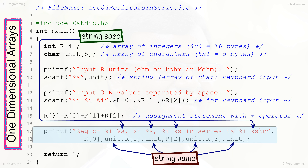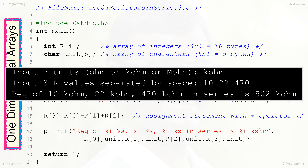Lines 17 and 18 contain the printf statement that displays the output using four %d integer specifications for the resistances and four %s string specifications for the units. Elements R[0], R[1], and R[2] are used for the input resistances and R[3] for the computed equivalent resistance. The string name 'unit' is used for the display of units for all four resistances. The display of execution, input string for units, followed by three resistances and final output, are shown in the inset window.